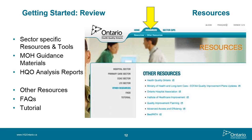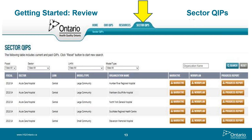The Sector QIPs page also doesn't require login. Here you'll find all sector QIPs posted so you can see what others are doing and not reinvent the wheel. Each column is sortable by year, sector, LHIN, organizational type, and you can search directly by organizational name. Hit the reset button to conduct another search. Your 2015-16 QIP will be located here only once it has been submitted and HQO closes the Navigator to submissions.